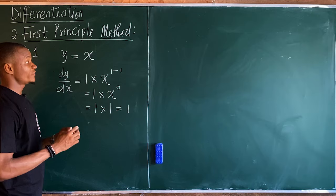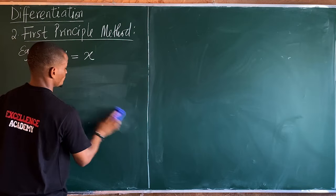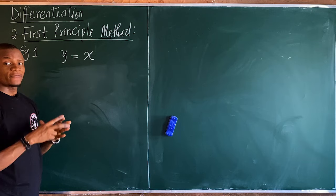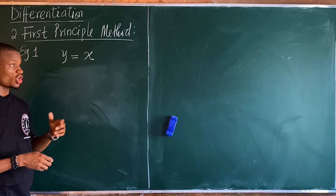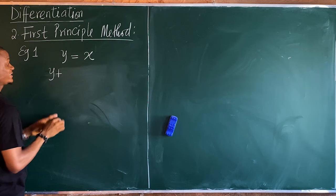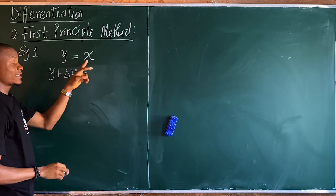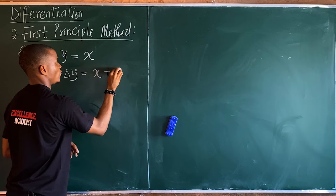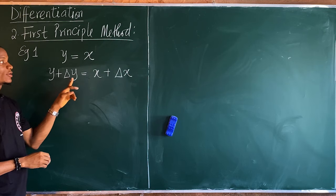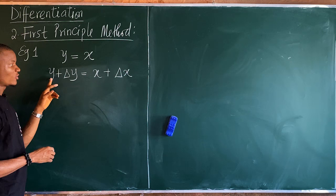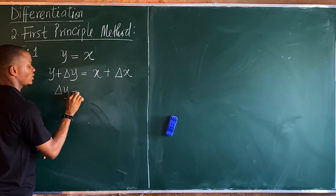Now here's the idea for first principle. From this function, the first step is to add Δy to y and add Δx to x. So y becomes y plus Δy, and x becomes x plus Δx.